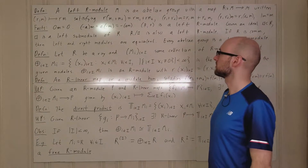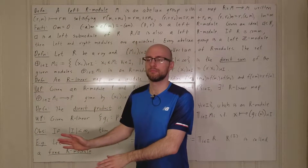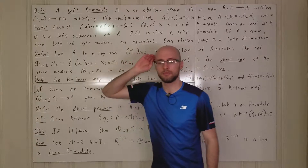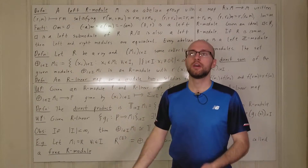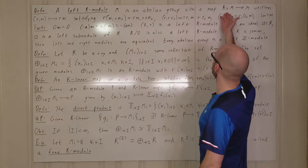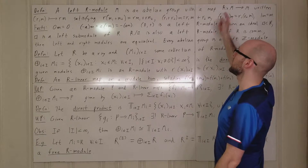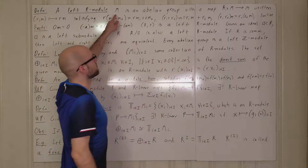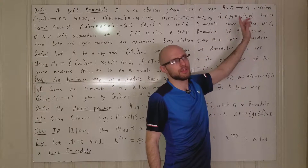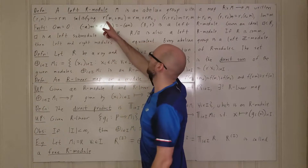Let's do some more algebra — now we're talking about modules. A module is defined as follows: you've got an abelian group M and a map that goes from a ring R cross M to M. R doesn't have to be abelian or commutative here; this can be any ring R. We write these elements as rm.